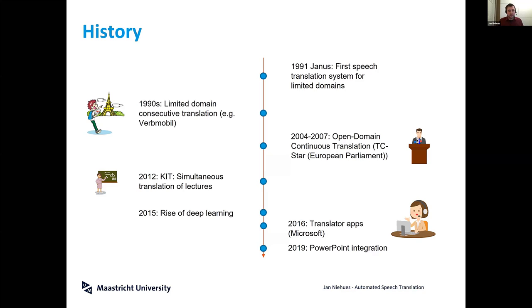Later, in 2012 for example, when I was at KIT, the group of Professor Waibel started the first simultaneous translation system for lectures. In this case, we were able to provide translations from German to English for exchange students who weren't proficient enough in German to follow the lecture.